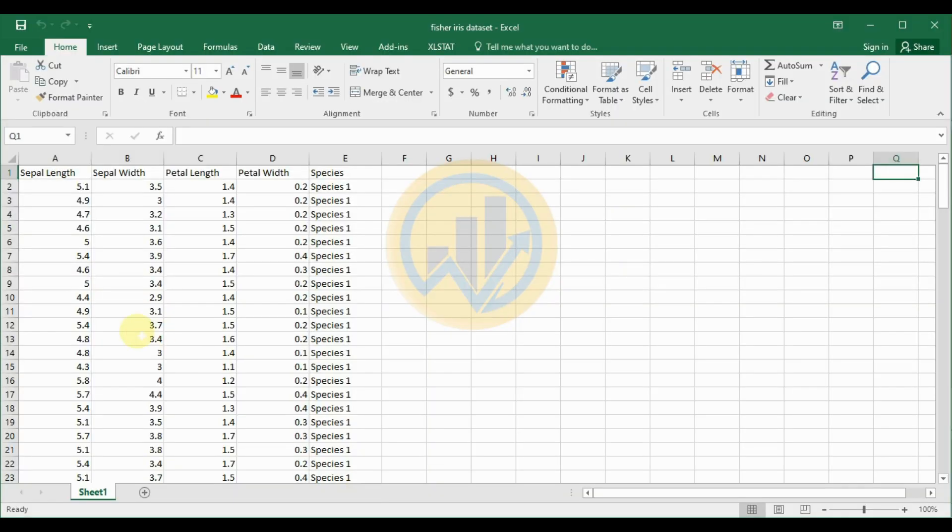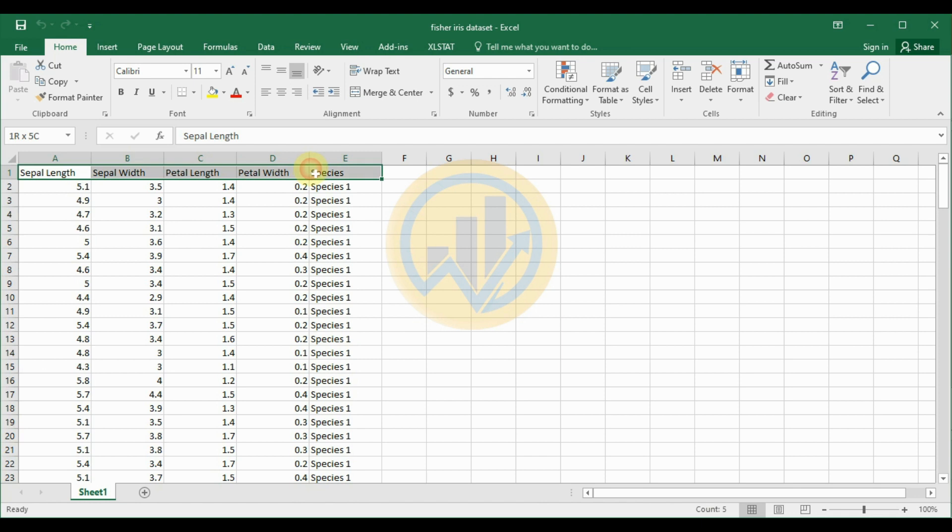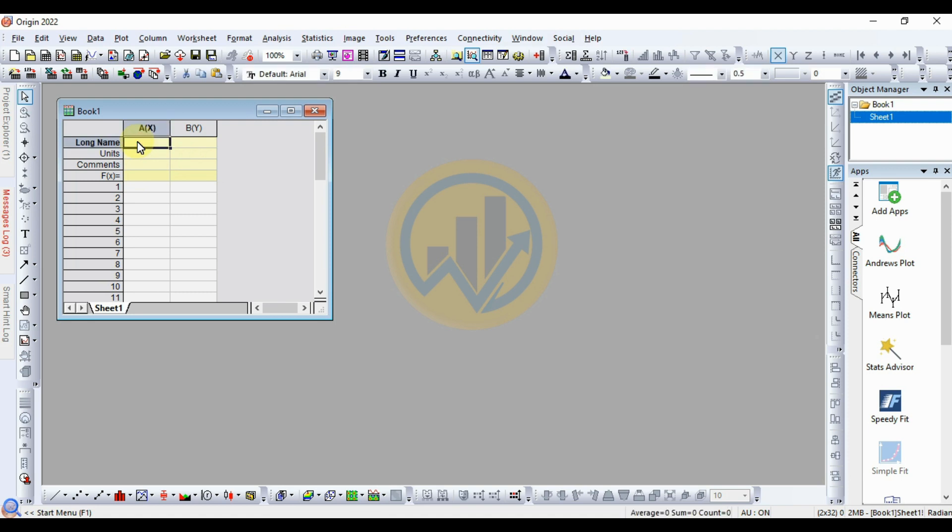The data is already entered in the Excel sheet. Now we take the data for three different species from the iris dataset: species 1, 2, and 3. So copy the data and paste it into the OriginPro software. First of all, copy the data title. Select the data and copy.